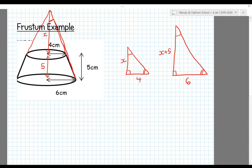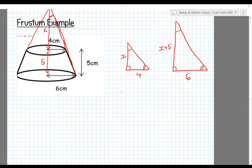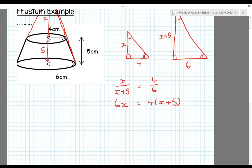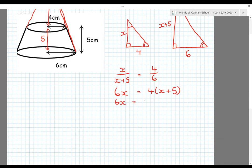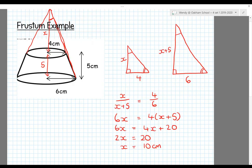Now we set up an equation using a ratio: x divided by x plus 5 equals 4 divided by 6. Multiply both sides by 6 and by x plus 5: 6x equals 4x plus 20. Subtract 4x from both sides: 2x equals 20. Divide by 2: x equals 10 centimeters.